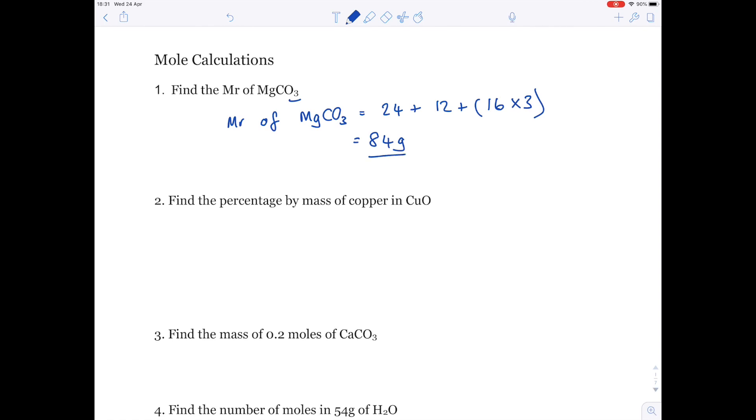Two: Find the percentage by mass of copper in copper oxide. Percentage by mass is worked out by doing the mass of the element in question over the mass of the entire compound, and then times by 100 because it's a percent.